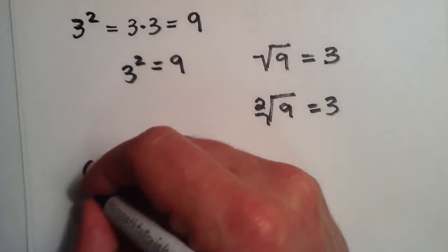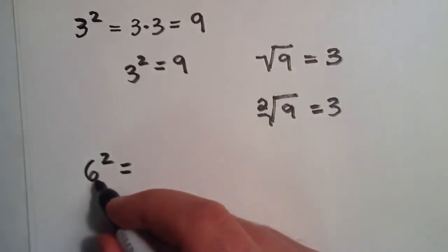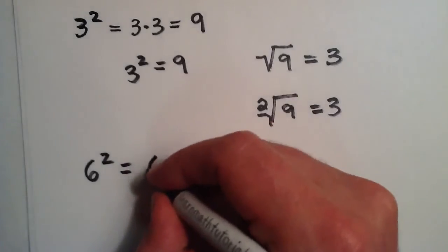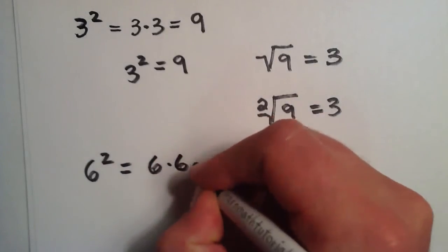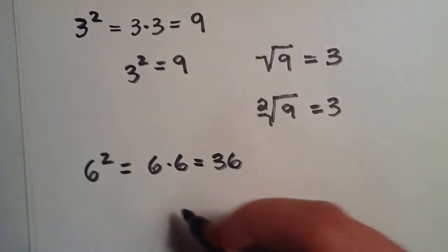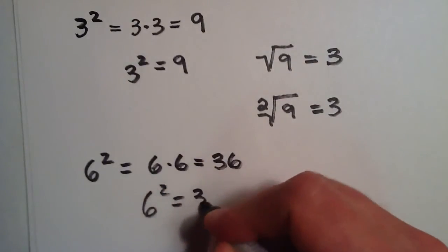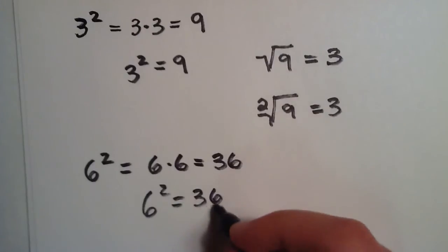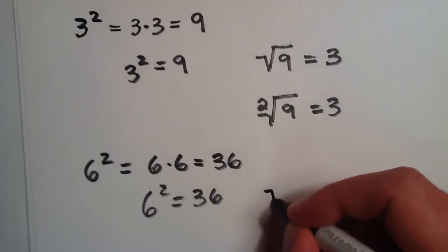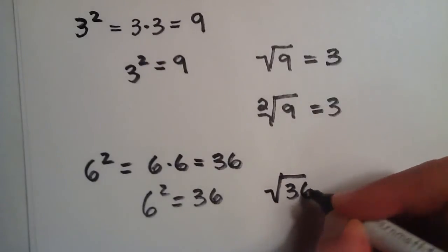Let's do 6 to the second power. So this is the base 6 multiplied by itself 2 times. 6 times 6 is 36, so 6 squared equals 36. Now, if we want to start with the 36 and make our way back to the 6, we just undo it by doing the square root of 36.